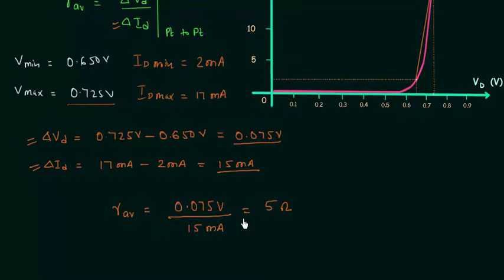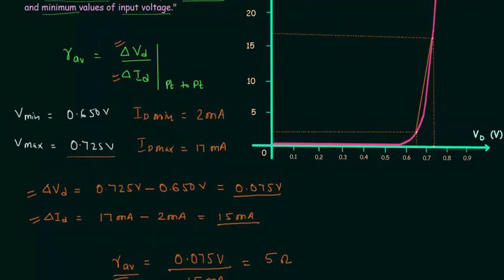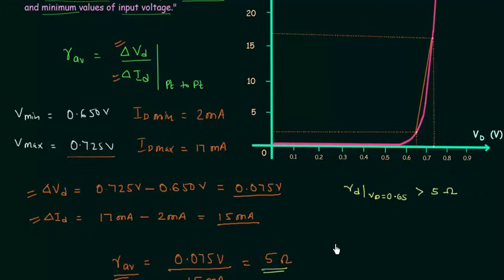So 5 ohms is the value of average AC resistance. When you try to calculate the AC resistance of the diode Rd when Vd is equal to 0.65 volts, it is greater than 5 ohms — greater than the average AC resistance.